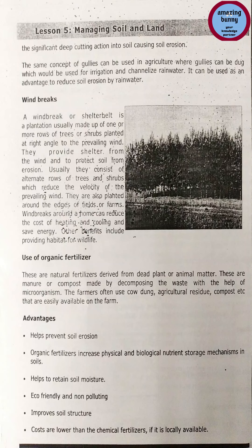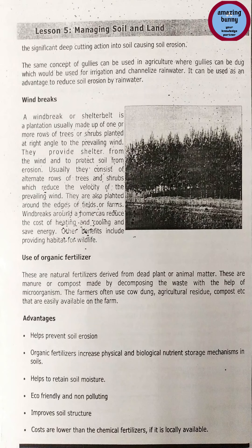Method 7 — Wind breaks: a wind break or shelter belt is a plantation usually made up of one or more rows of trees or shrubs planted at right angles to the prevailing wind, providing shelter and protecting soil from erosion. They typically consist of alternate rows of trees and shrubs that reduce the velocity of the prevailing wind and are planted along the edges of fields or farms. Wind breaks around a home can also reduce the cost of heating and cooling, save energy, and provide habitat for wildlife.